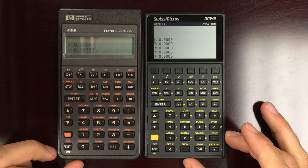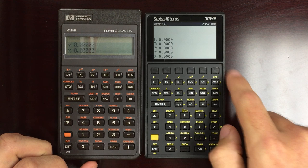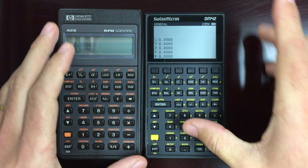Let me just compare the two calculators real quick. You'll notice that the Swiss Micros, despite having a much larger screen and an extra row of keys, is actually shorter than the original 42S. So portability, very, very good.